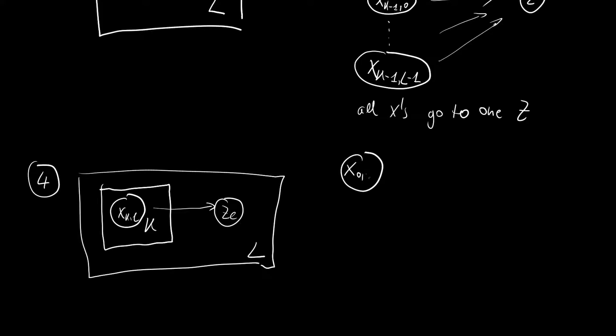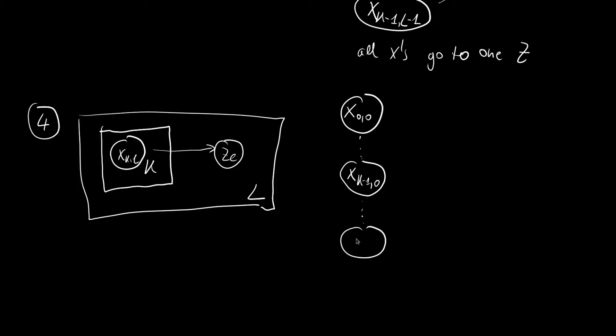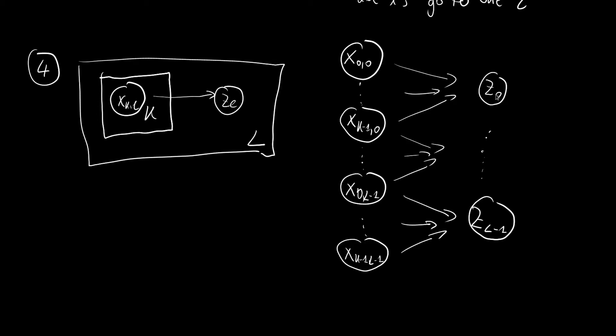So we have an x zero zero all the way to an x k minus one zero. And then we have a last iteration with an x zero and l minus one all the way to an x k minus one l minus one. And here we have a z zero and here we have a z l minus one. And all of them are going here. And then they are going to something in between here. And these last are going here. And the pattern is of course the x's with a particular l go to the z with the same l. So all x's with l go to z l.